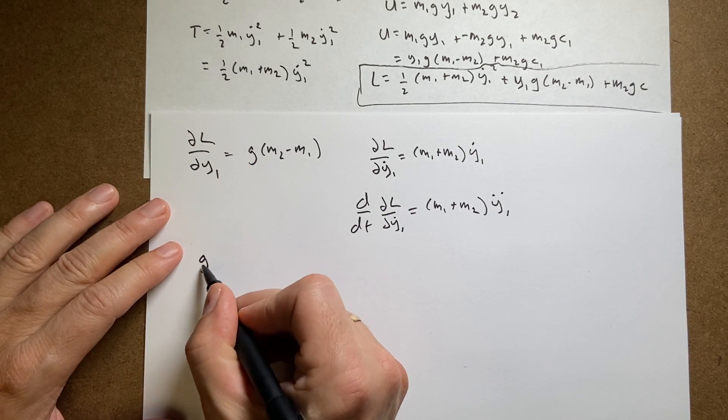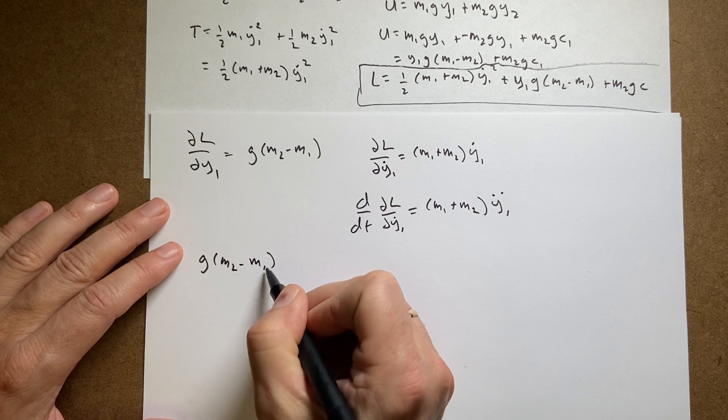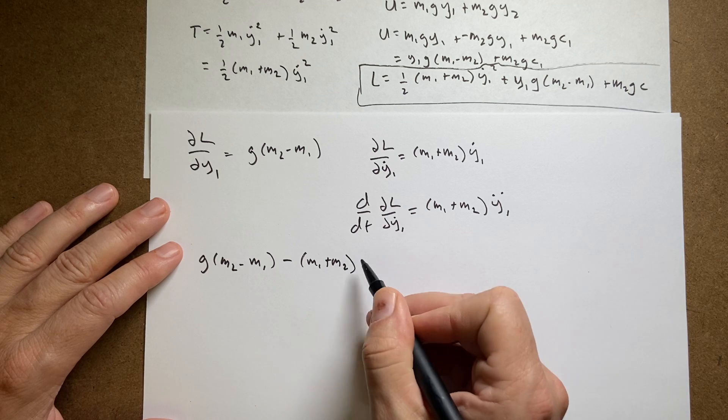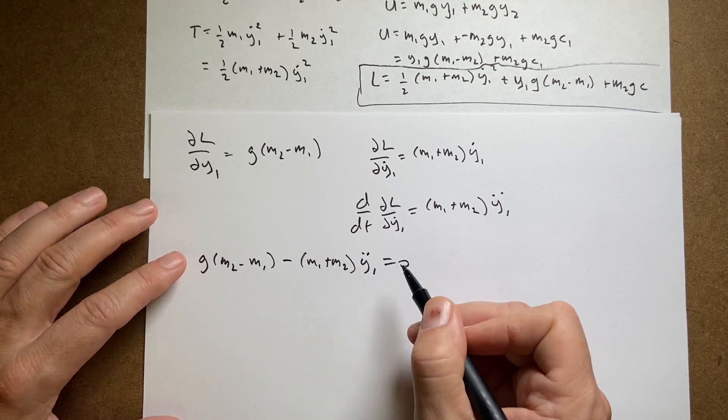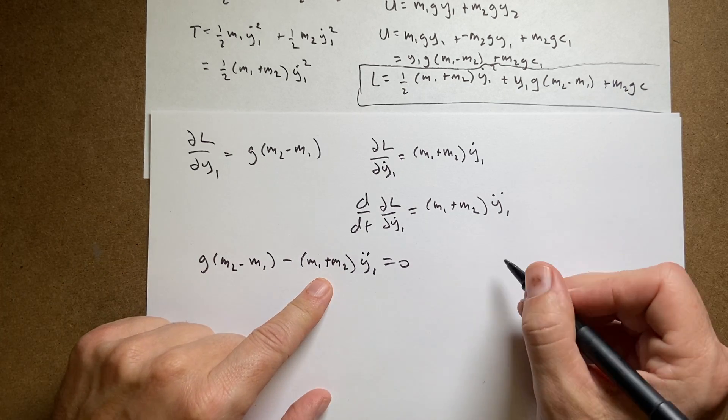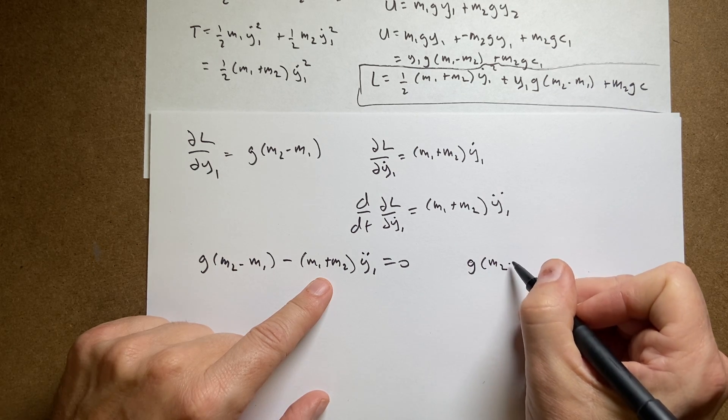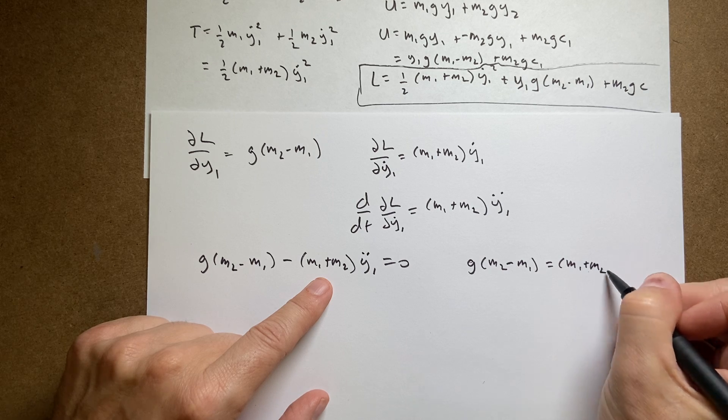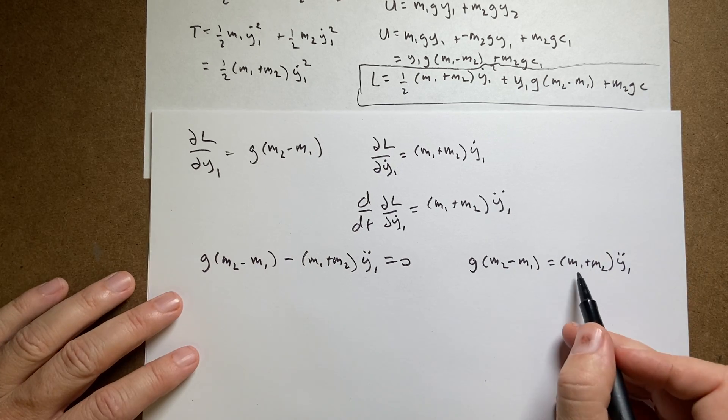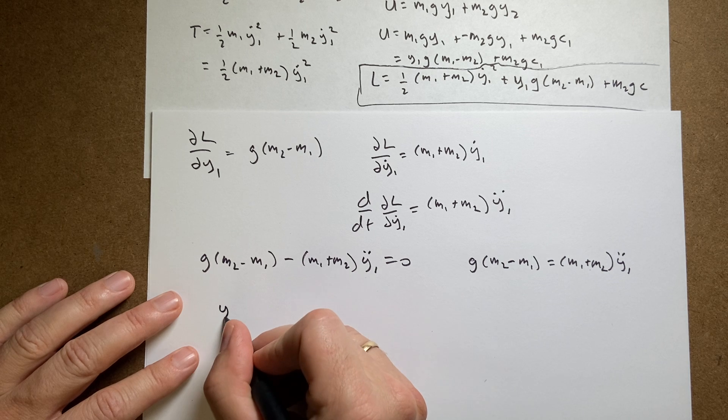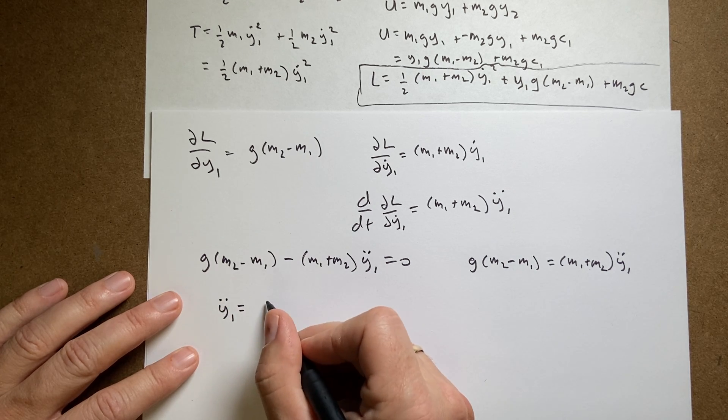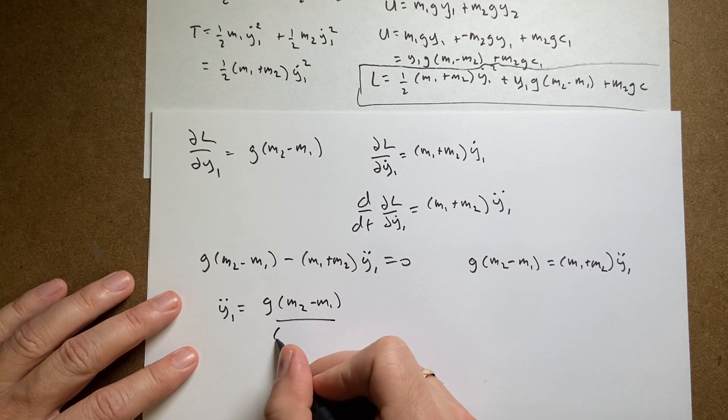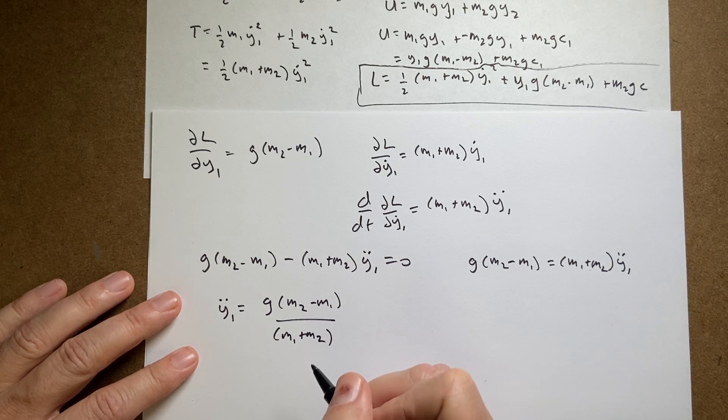So it's going to be g times m2 minus m1 minus this m1 plus m2 y1 double dot equals 0. So if I start, I'm going to add this to both sides and I get g m2 minus m1 equals m1 plus m2 y1 double dot. I can divide both sides by m1 plus m2 and I get y1 double dot equals g m2 minus m1 over m1 plus m2. That's it.